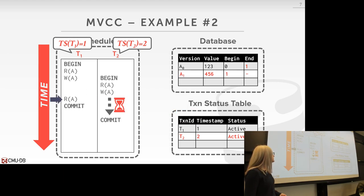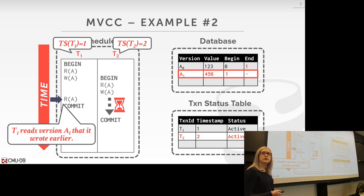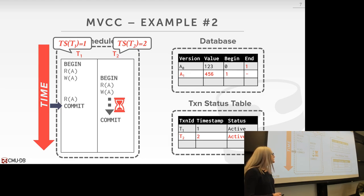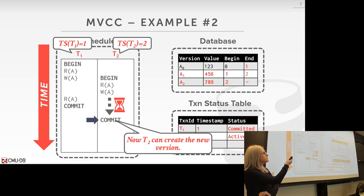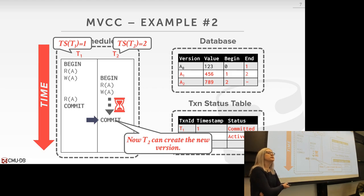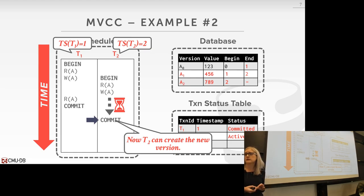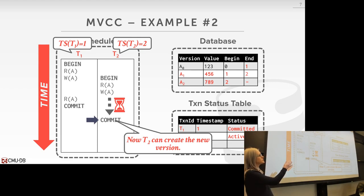Back to T1 — it reads the same version it wrote, then commits. Now T2 can proceed, creating version A2 with value 7, 8, 9. We assign it timestamp 2 with end timestamp infinity, and update A1's end timestamp to 2. Whether T2 actually commits depends on the concurrency control protocol and isolation level. This example shows how we update object versions, maintain the transaction status table, and determine visible tuples.